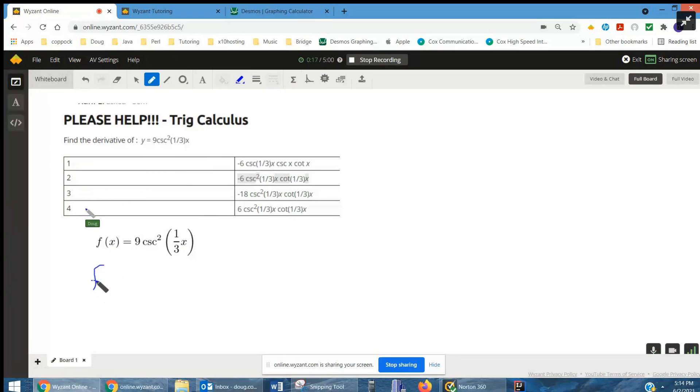So to find f'(x), we take this exponent 2 times the 9, which gives us 18, and reduce the exponent by 1. So we still have that cosecant of one-third x.